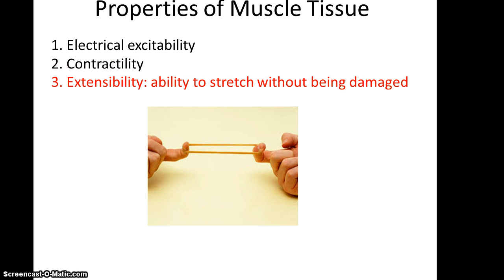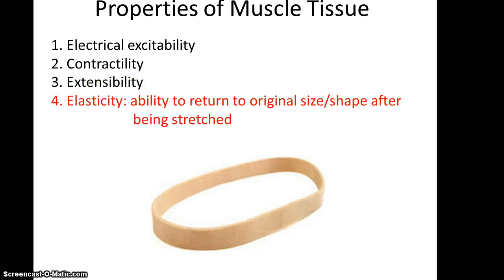Extensibility: muscles are able to stretch without being damaged within reason, like the rubber band shown here, you can stretch it to some extent. And, like rubber bands, muscles have elasticity, which is the ability to return back to that original shape and size after being stretched.